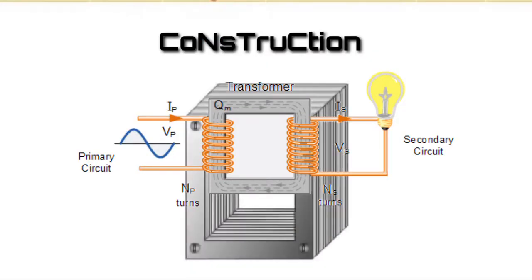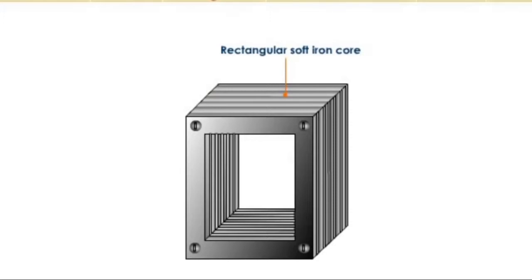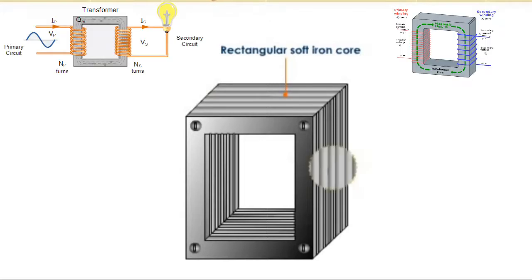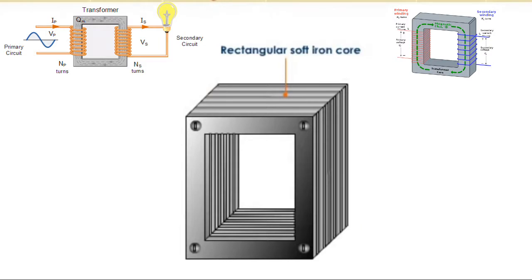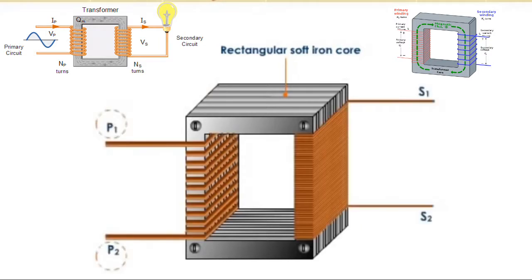Construction: A transformer consists of a rectangular soft iron core made of laminated sheets. These sheets are well insulated from each other. Two coils, P1, P2 and S1, S2, are wound on the same core but are well insulated from each other.